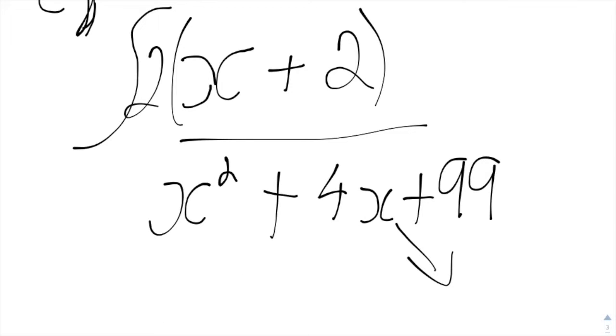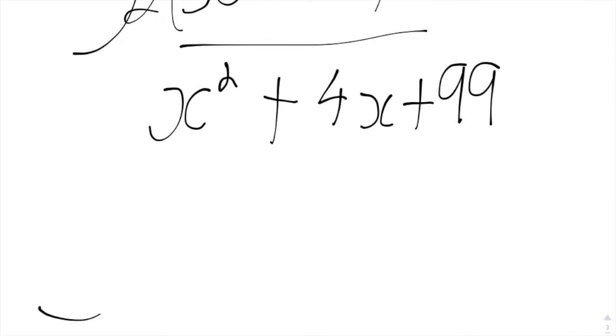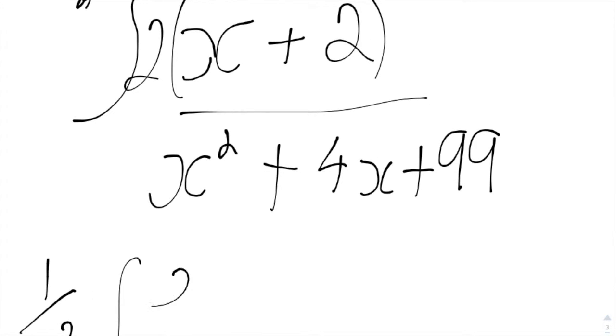So to keep it, make sure it's equal, all we have to do is if we times it by 2 here, we'll times it by a half outside. So we'll get an integral of this form: 2x plus 4 over x squared plus 4x plus 99.